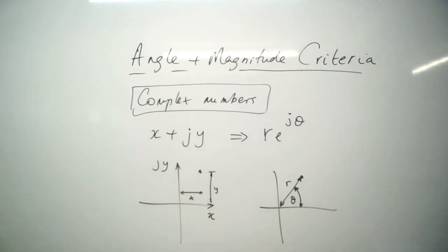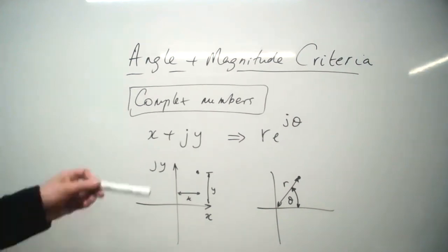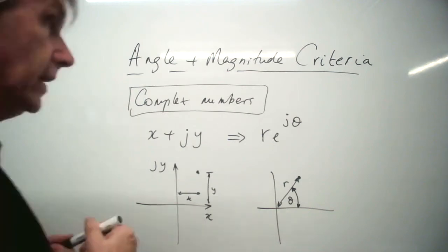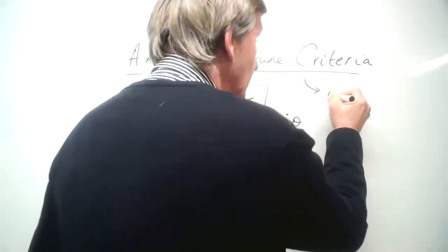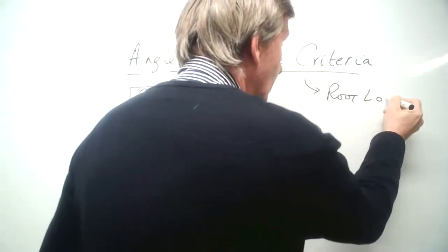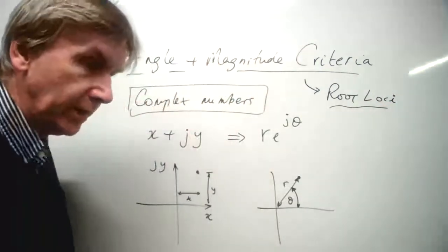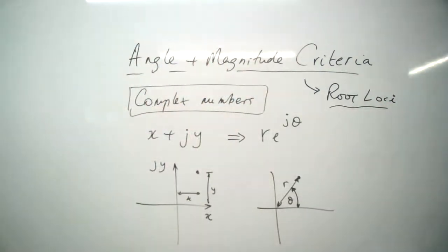We've still got two or three minutes to go, and today's lecture is on the angle and magnitude criteria, which is applicable to the root loci. That's what we can apply within the root loci context, and we had a quick look at it last week, but today we're going to do a bit more with it.